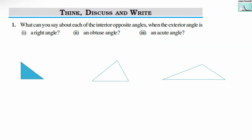Now let us take the second case: if the exterior angle is an obtuse angle, what about the interior opposite angles? We are going to discuss three possibilities. In possibility 1, with triangle ABC, if the exterior angle is obtuse, angle A can be acute and angle B can be a right angle.